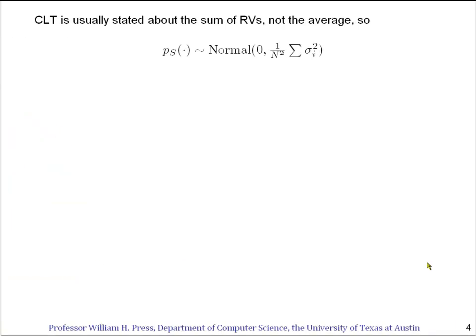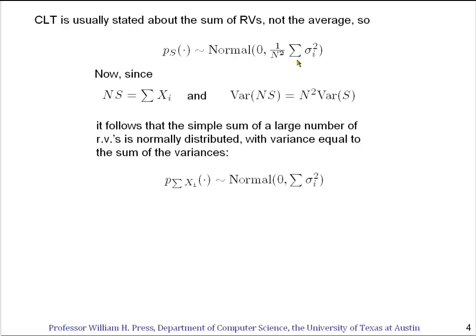Now, the central limit theorem is usually stated about the sum of random variables, not their average. What we found is that the probability distribution of an average of variables is a normal with this variance. What we might have been computing instead is the probability distribution of the sum of a bunch of x_i's. That would be just n times our S.